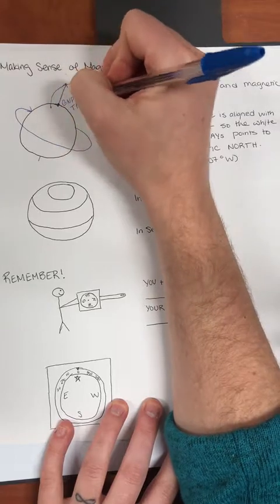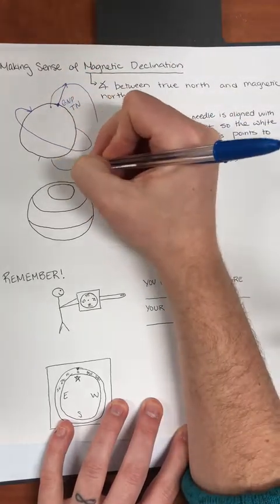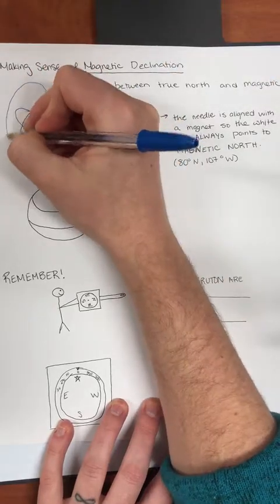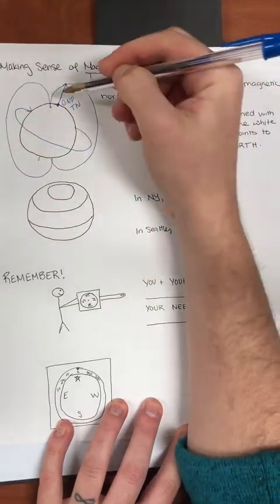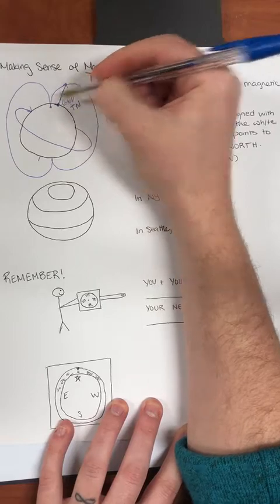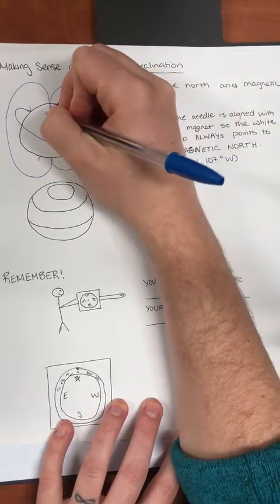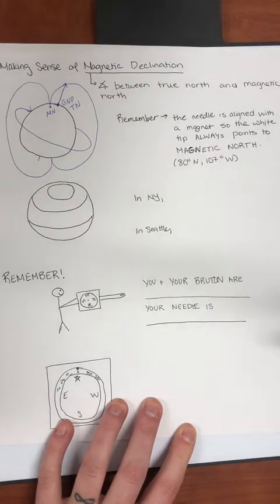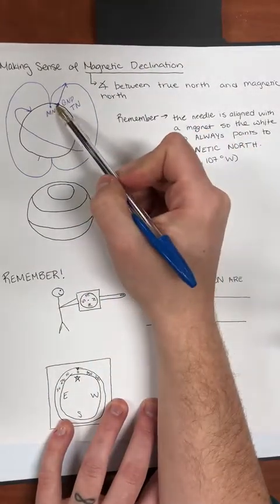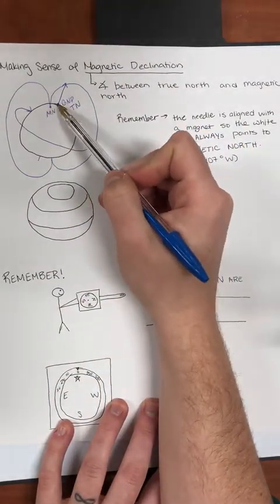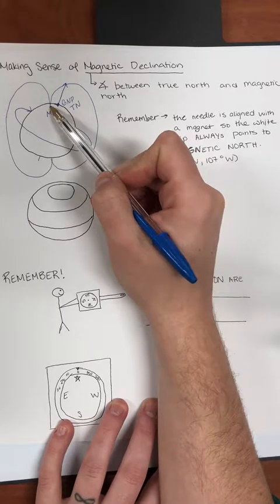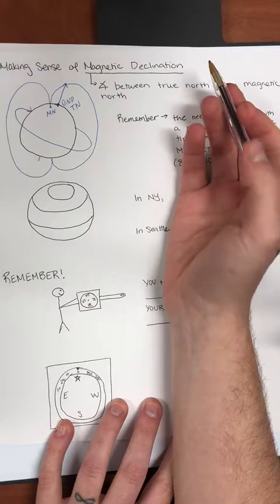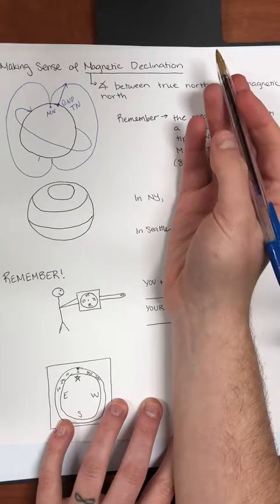The magnetic north pole is actually offset from the geographic north pole — we'll abbreviate magnetic north as MN. There is a distance between magnetic north and geographic north, and the angle we measure from wherever we are on Earth is called magnetic declination.